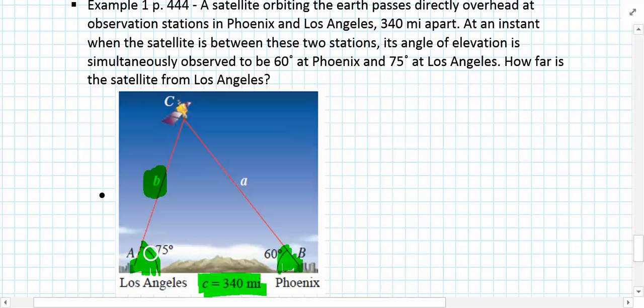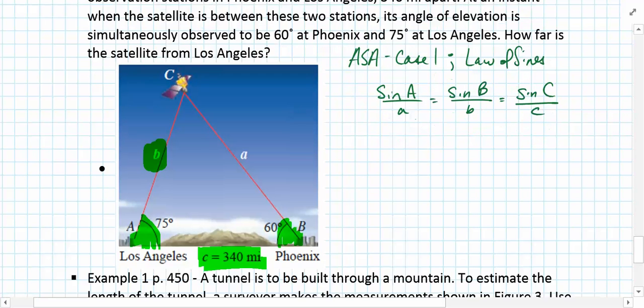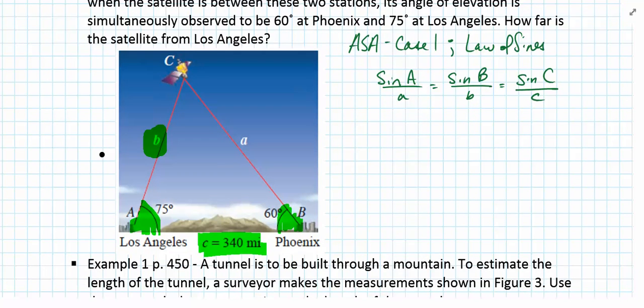In this scenario we have two known angles and an included side, so this is ASA, which is case number one. This would allow us to use the law of sines. The law of sines states that sine of capital A over lowercase a equals sine of capital B over lowercase b, which equals sine of capital C divided by lowercase c.